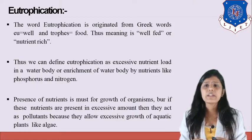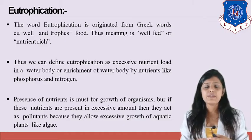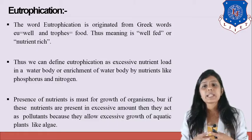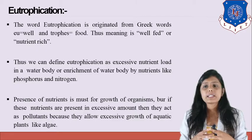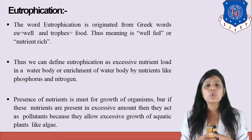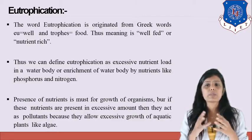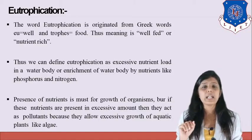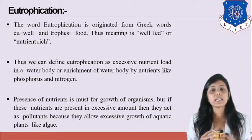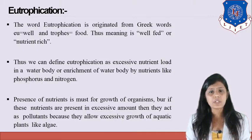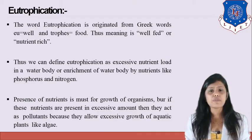Eutrophication is one of the effects of water pollution. We can define eutrophication as excessive nutrient load in a water body, or enrichment of a water body by nutrients like phosphorus and nitrogen. Nutrients are necessary for the growth of organisms, but if present in excessive amounts they act as pollutants, allowing excessive growth of aquatic plants like algae.